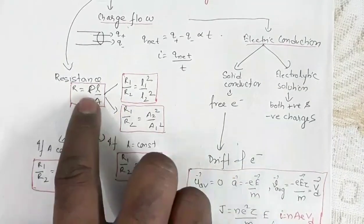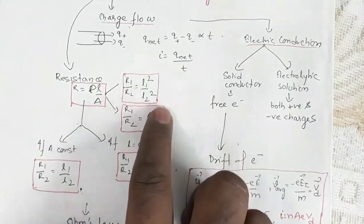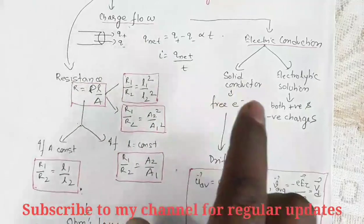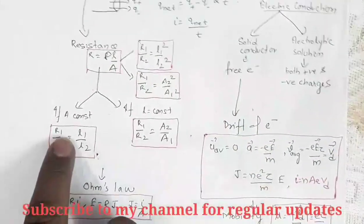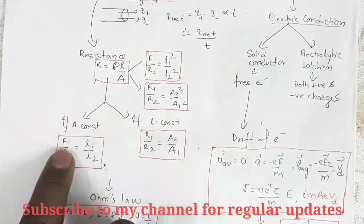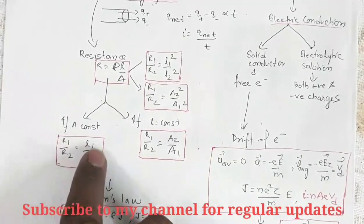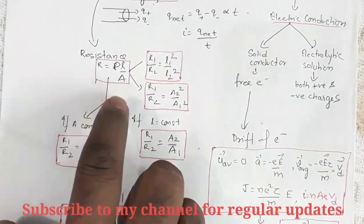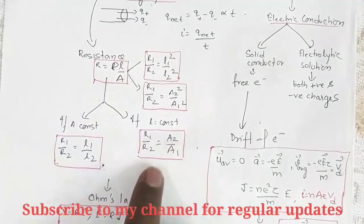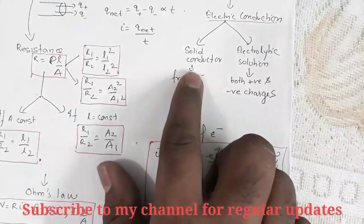The stretched-wire ratio is proportional to L1²/L2² and inversely proportional to area, so it becomes A2²/A1². However, if area is constant, then R1/R2 = L1/L2. And if length is constant, then R1/R2 = A2/A1.